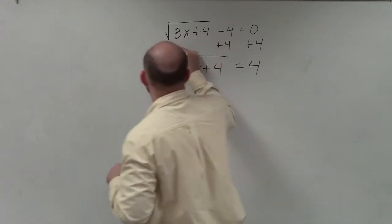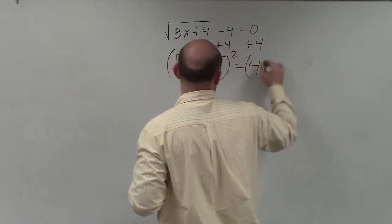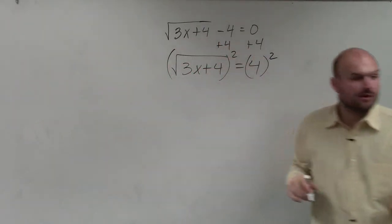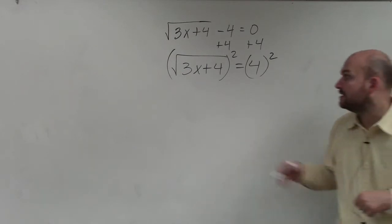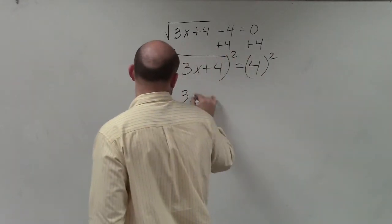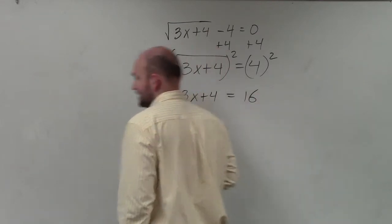The inverse operation of taking the square root would be to square. Remember, whatever you do on one side, you have to do on the other side. So now I'm just left with 3x plus 4 equals 16.